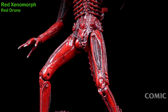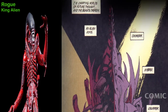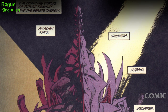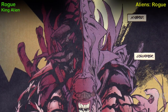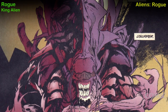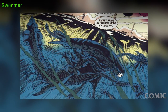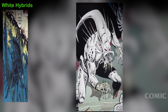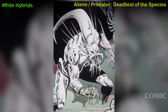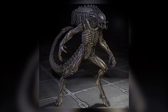Red Xenomorph or Red Drone — Aliens Genocide comics and NECA toyline. Rogue Alien, also known as Alien King or King Alien — Aliens Rogue comic; may or may not be linked with the toy, as this was a mad scientist-engineered Xenomorph. Swimmer Alien — Aliens Colonial Marines comic. White Hybrids — Aliens Predator: Deadliest of the Species comics.